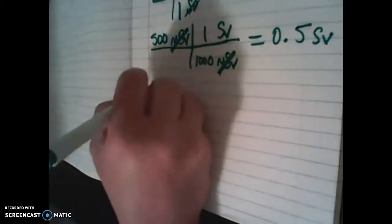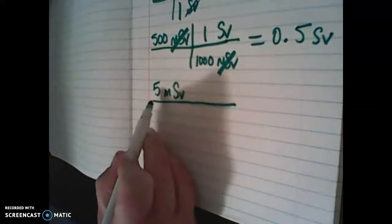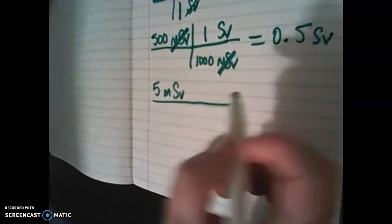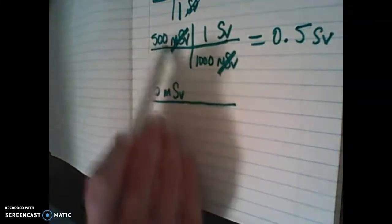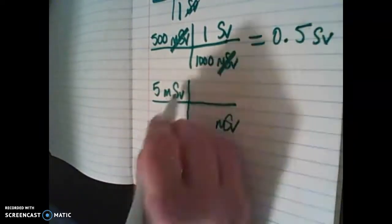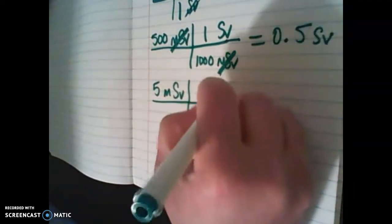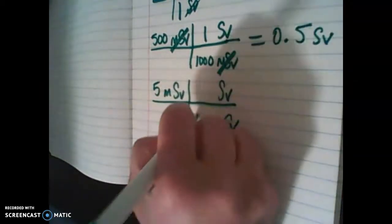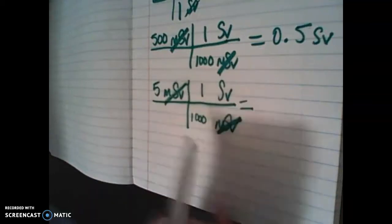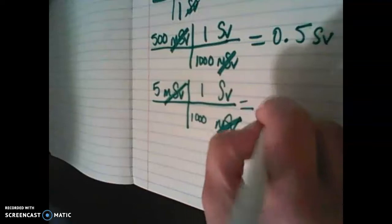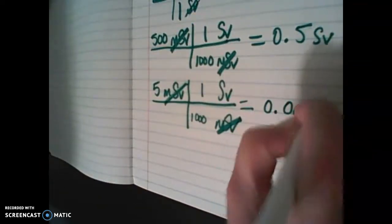Let's do one more: 5 millisieverts — we want to know how many sieverts. That's not very many millisieverts. So if we are looking for sieverts, it's going to be a decimal — a really, really small number. Because this is a giant unit and this is a tiny unit. So if I only have a few tiny units, my giant unit has to also be really, really small. I put my conversion here: millisieverts on the bottom so they cancel out, and sieverts on top. We know there's 1,000 millisieverts in 1 sievert. These cancel out and I'm left with 5 divided by 1,000, which is 0.005 sieverts.